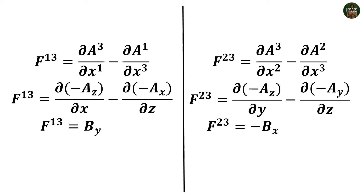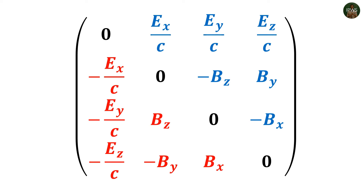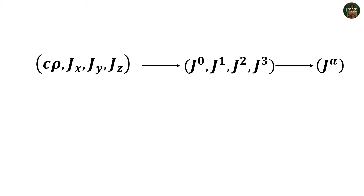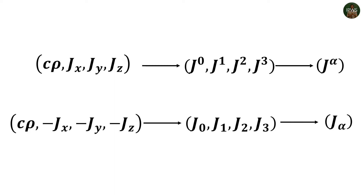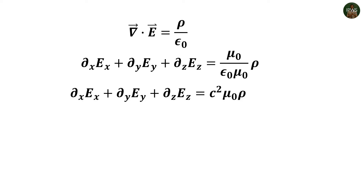With all six components established, we can fill the rest to create the full matrix of F^(alpha beta). We also need to denote source terms of Maxwell's equations, defining them analogously to four-position: positive current terms as contravariant J^alpha (upper indices) and negative components as covariant J_alpha (lower indices). We begin combining Maxwell's equations with source terms — taking the first equation, expanding divergence as three derivatives, and replacing mu_0 epsilon_0 with 1/c^2.